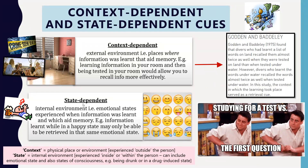State dependent cues are about the internal environment — they relate to what's happening inside a person rather than the outside world. Most examples involve emotional states, but state dependent cues also include any state of consciousness: being drunk, under the influence of a drug, or under anesthetic all count as internal environments that can influence memory.